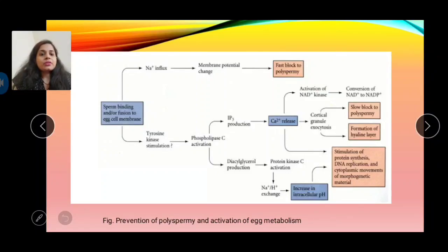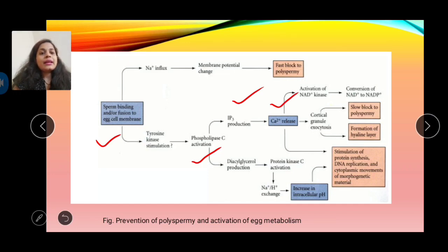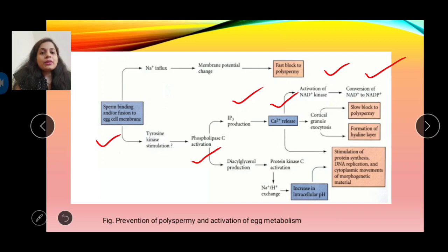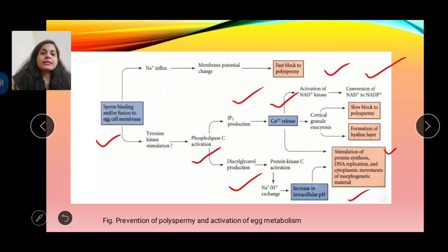In summary of the diagram: sperm binds to the egg, activating phospholipase C, which produces IP3. IP3 releases calcium ions from the endoplasmic reticulum. In the early response, calcium activates NAD+ kinase, which converts NAD to NADP+, acting as a coenzyme for lipid synthesis. In the late response, elevated calcium opens the sodium-hydrogen exchange channel, increasing intracellular pH, which leads to DNA synthesis and egg activation.